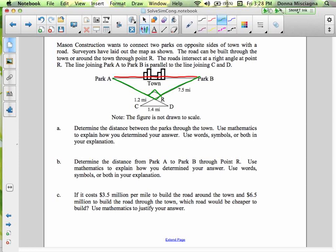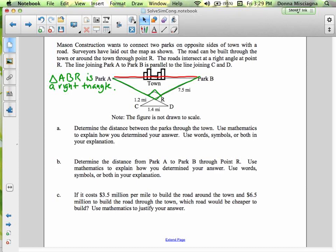So we have a right angle here and notice that would be a right triangle. So let's just call these A, B and R. So triangle ABR is a right triangle. So you can add that to your notes. So you don't have the questions below, but we'll abbreviate these A, B and C questions as we go along. All right, so we're also told that this line joining Park A to Park B is parallel to the one connecting points C and D.